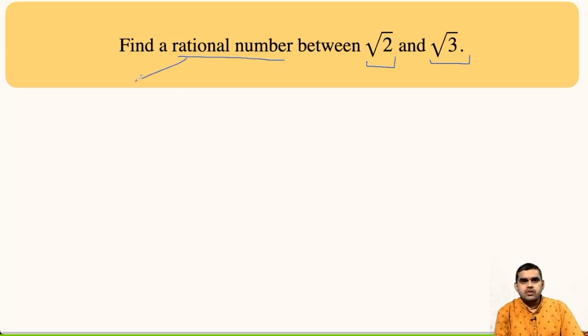So, first of all, what is a rational number? A number which can be expressed in the form p upon q, where denominator q is not equal to 0, is called a rational number.